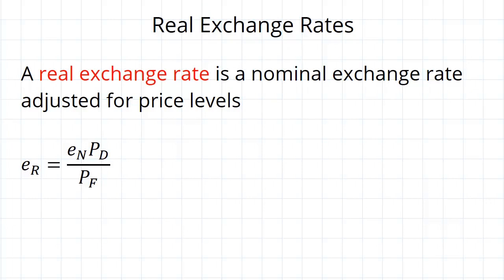A real exchange rate is just a nominal exchange rate which has been adjusted for price levels. So we've got this equation here where we say the real exchange rate is equal to the nominal exchange rate times the domestic price level divided by the foreign price level. And why would we have that?